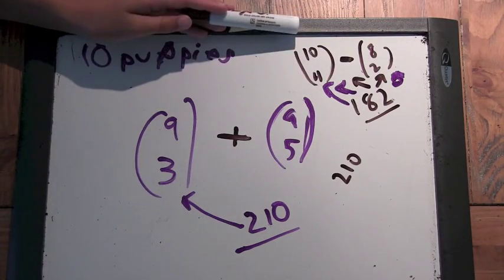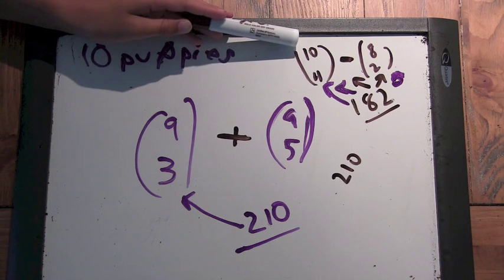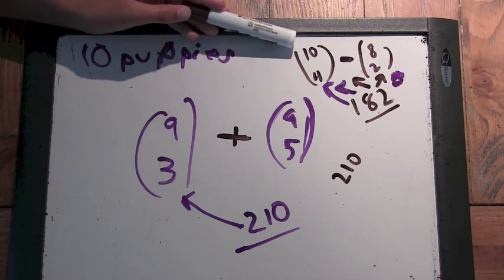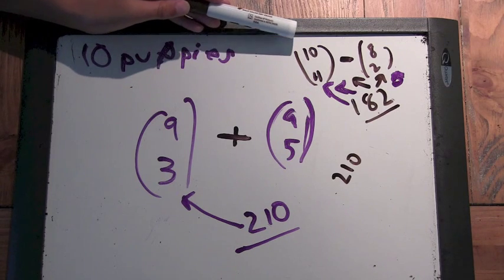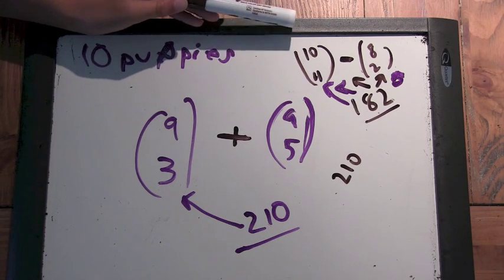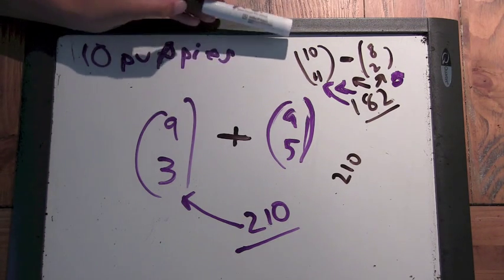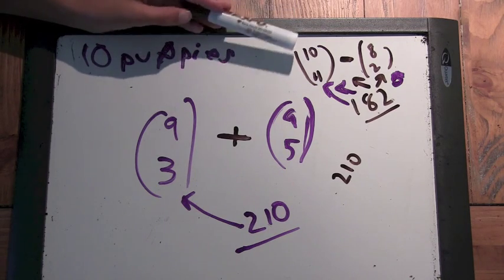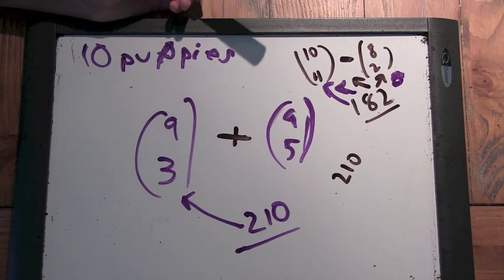And 8 choose 2 is the way to put two more puppies into the group of 4 that biter and nipper are already in. Because we wanted to count how many ways could biter and nipper be in the same group. And then we got 182 from this.